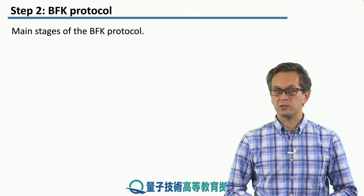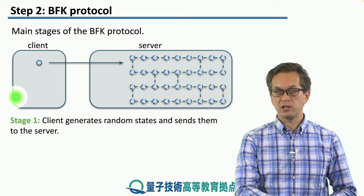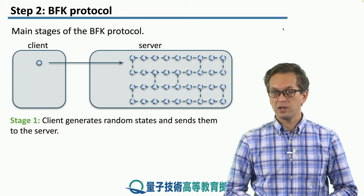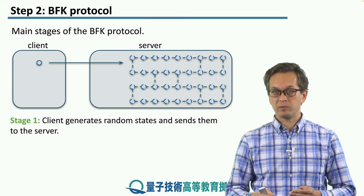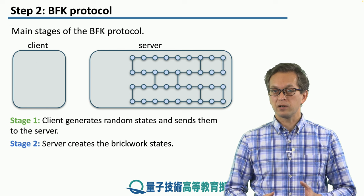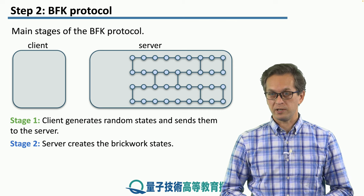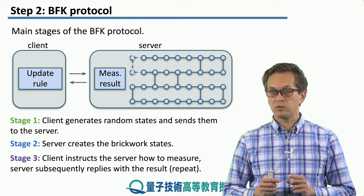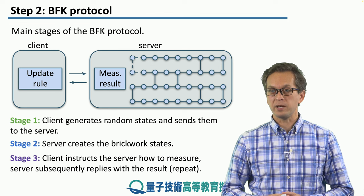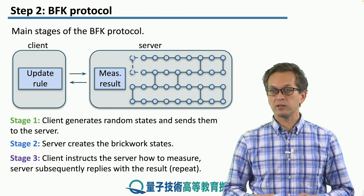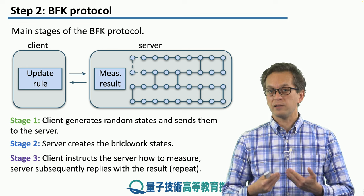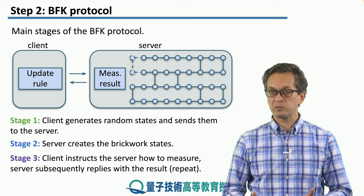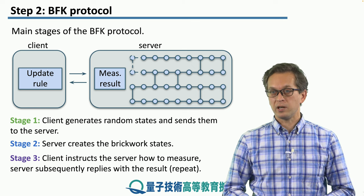Let's look at the main stages of the BFK protocol. The client generates qubits and sends them to a server who has the capability of storing them in a quantum memory. In the second stage, the server loads them into memory and creates a brickwork state. In stage three, the computation starts: the client instructs the server which qubit to measure and in what basis, the server replies with the outcome, and then the next round starts. The client updates the measurement basis for the next qubit, sends it to the server, and the server performs the measurement and communicates a classical bit back to the client.